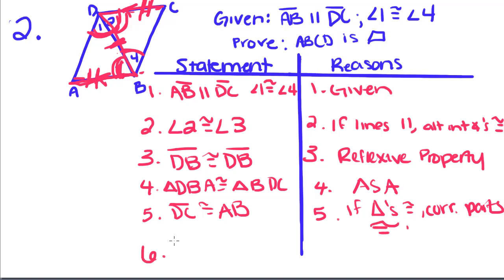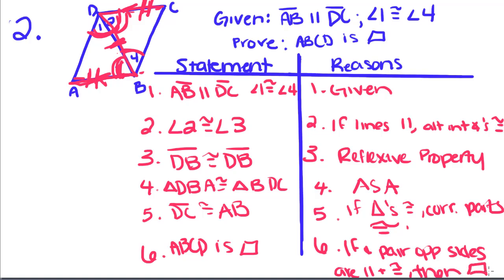Finally, we can say that ABCD is a parallelogram because if one pair of opposite sides are parallel and congruent, then it is a parallelogram.